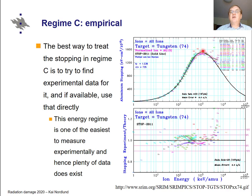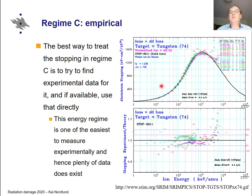Because of that, the dominant approach is to find experimental data and use it directly, fitting some analytical equation to it. The good news is that this energy regime is one where it is quite easy to measure the electronic stopping power, so there is plenty of experimental data. This shows, for example, stopping power data points for various ions in tungsten as a function of ion energy, and the solid line is the SRIM 2011 stopping power fitted to this data.